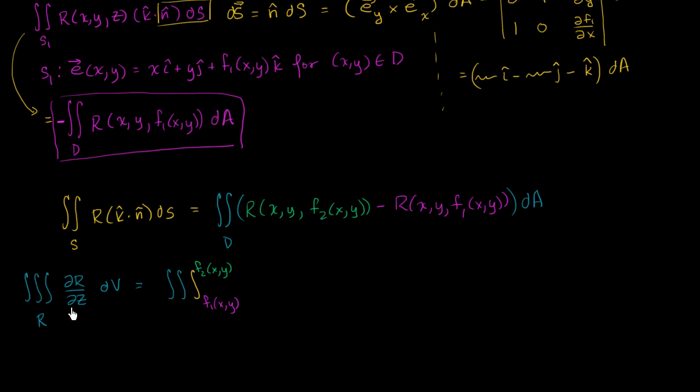And I'm going to integrate the partial of r with respect to z, then dz. Then I'll have to integrate with respect to y and x, or x and y. I can just write that as da.